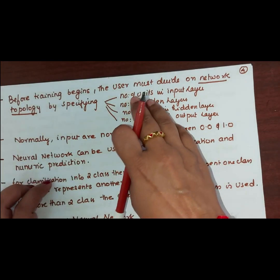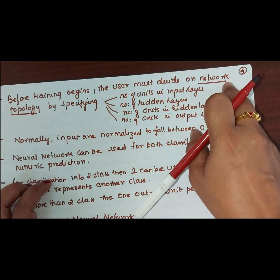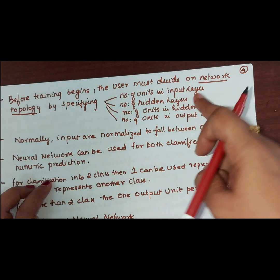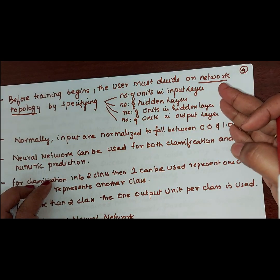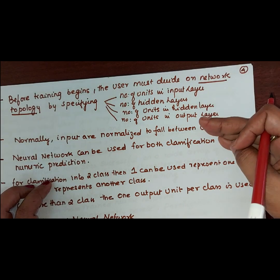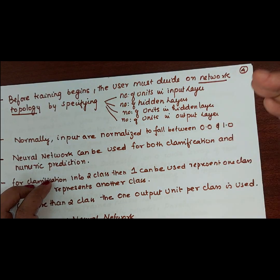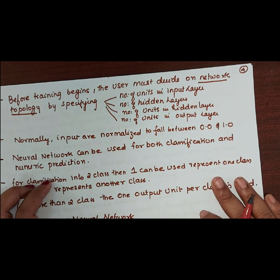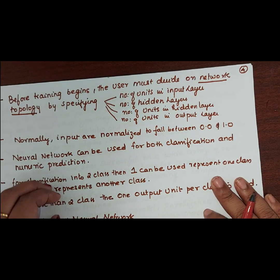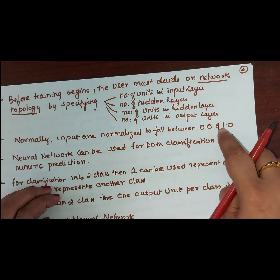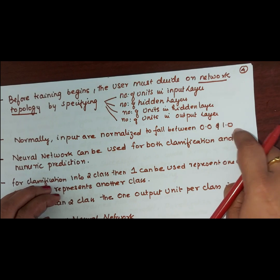Before training begins, the user must decide on the network topology by specifying the number of units in the input layer, the number of hidden layers, the number of units in each hidden layer, and the number of units in the output layer. Normally the inputs are normalized to fall between 0.0 and 1.0.